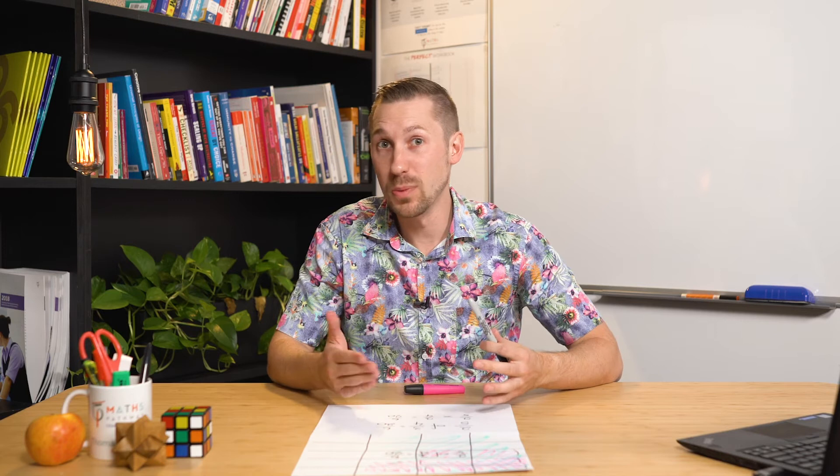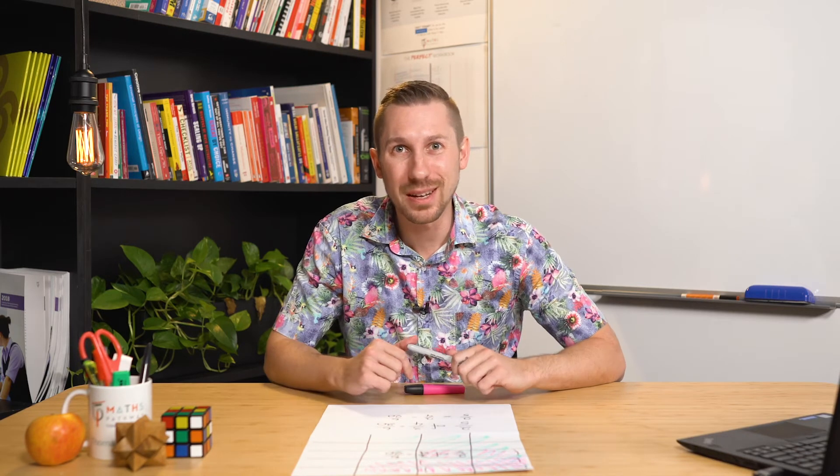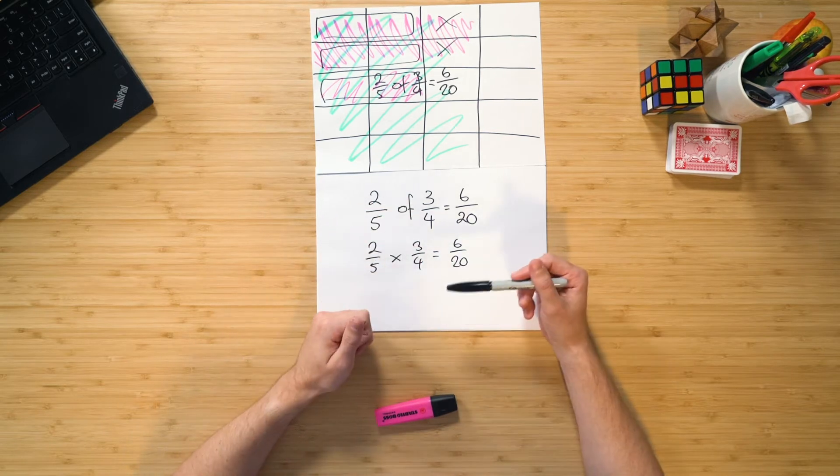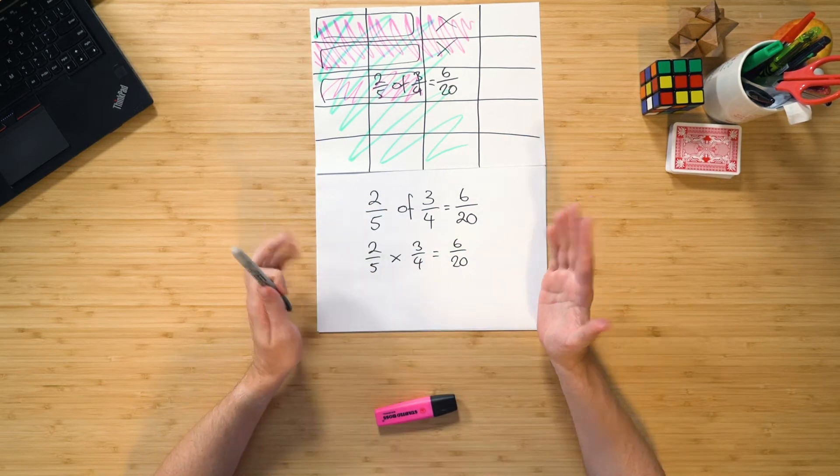For example, three groups of four. That means three times four, doesn't it? And it's the same with this. If I've got two fifths of a group of three quarters, well that just means two fifths times three quarters.